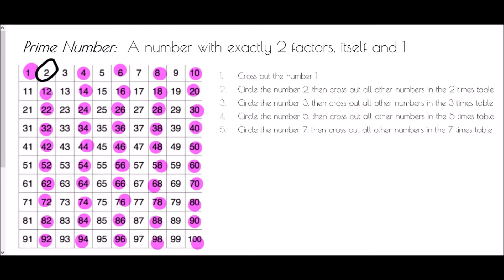Then circle the number three and cross out all other numbers in the three times table. Put a little circle around three and take out numbers in the three times table. You'll notice some are already highlighted — six and twelve — but the other ones we need to cross out: three, six, nine, twelve, and so on.